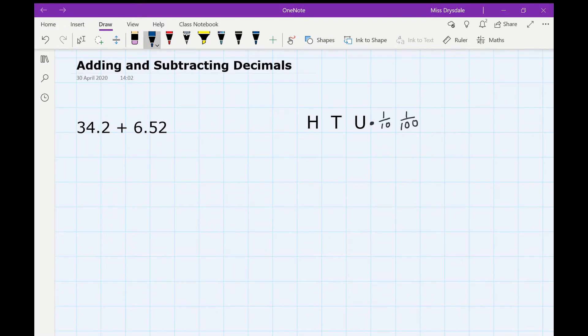So our first example is looking at addition. We've got 34.2 add 6.52. So if we're going to set this up as a normal calculation, we've got 34.2. The important thing here is to get your decimal point in the right place. I'm going to pop down the decimal point for the next number that we've got. We've got 6.52.